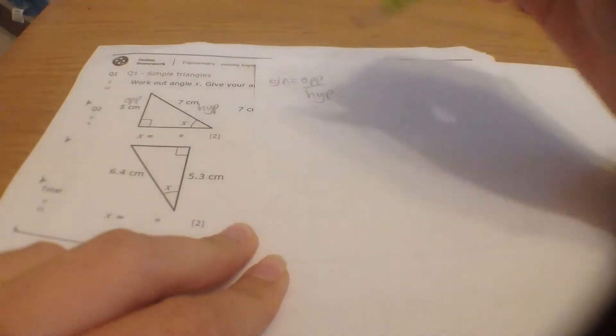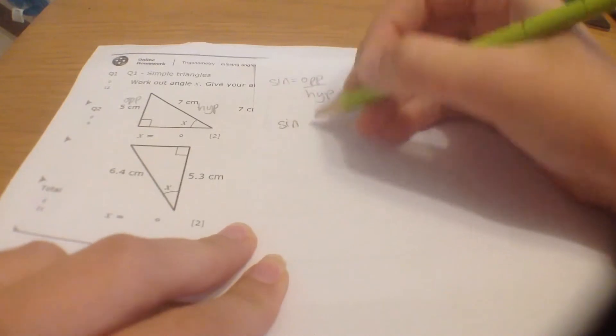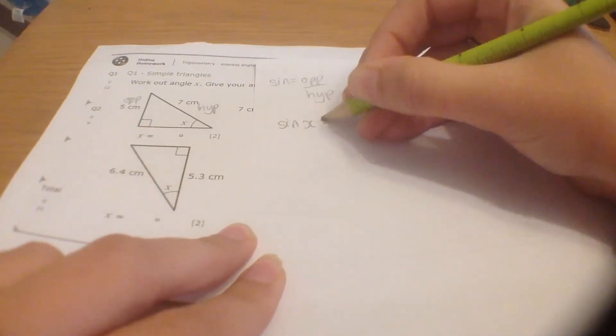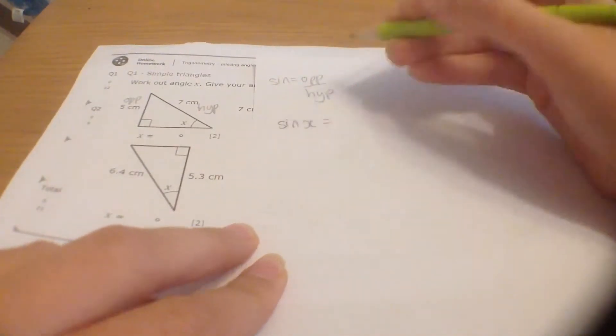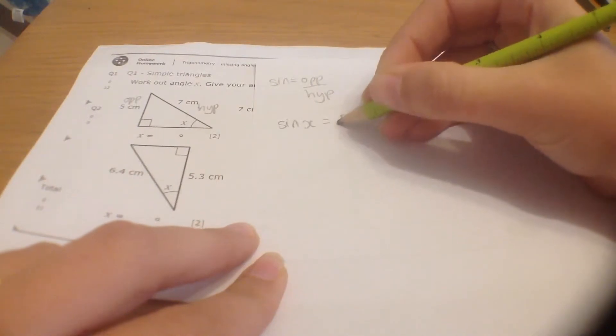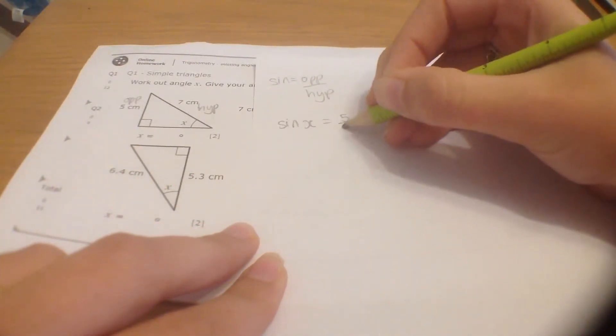Let's put in our numbers. We don't know what the angle is on this triangle, so let's just put it sin x, unknown. Opposite is known, the opposite side is 5, and the hypotenuse side is 7.